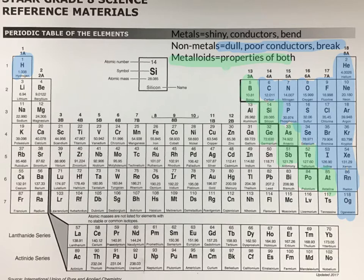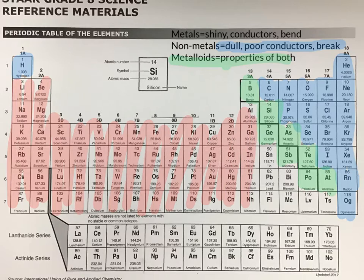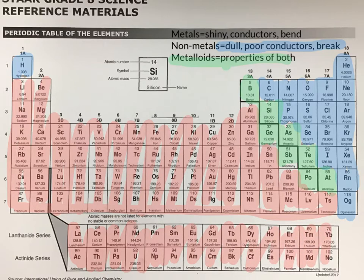Finally, we have the metals, which make up the largest group on the periodic table — that is everything being shaded here in red. As you can see, it contains elements such as aluminum, copper, gold, silver, sodium, magnesium, and calcium. Your metals are going to be shiny, they are good conductors of heat and electricity, and they are also malleable, meaning that they bend instead of breaking.